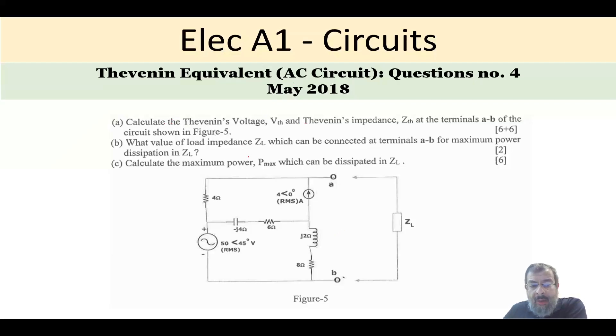Then what is the load impedance if connected here? Basically you will have maximum power dissipation through ZL. And what is this maximum power that will be dissipated? So this is a very, very standard question that is about Thevenin equivalent.